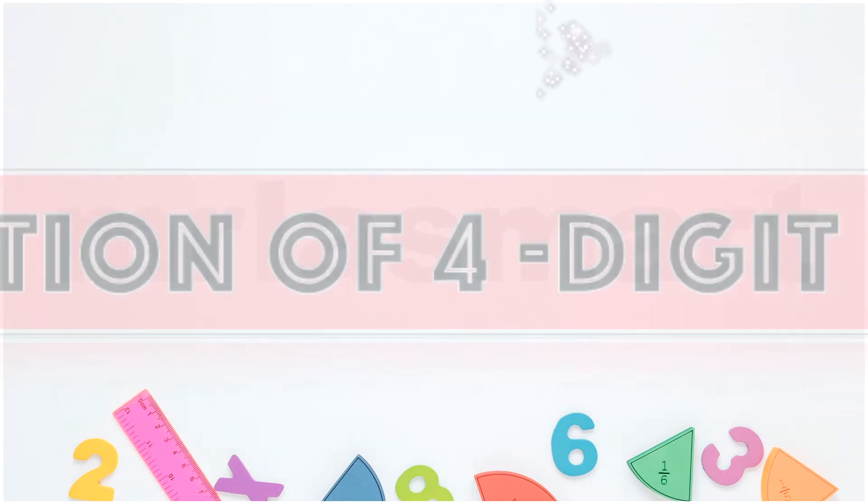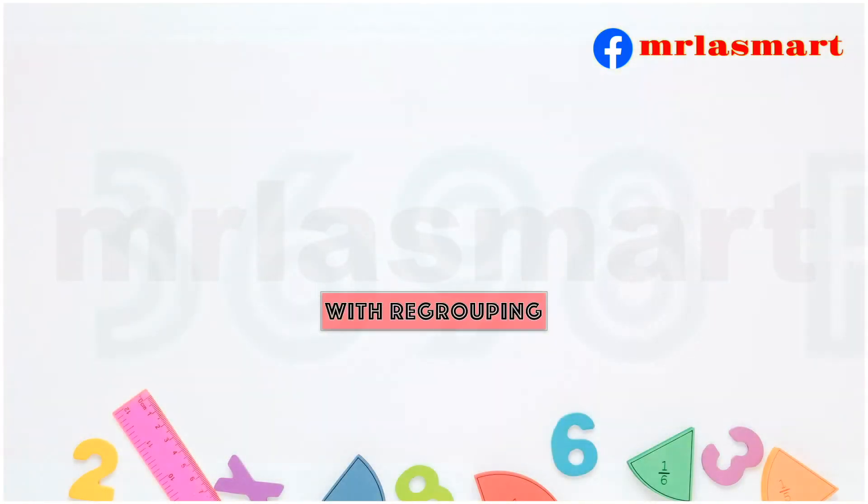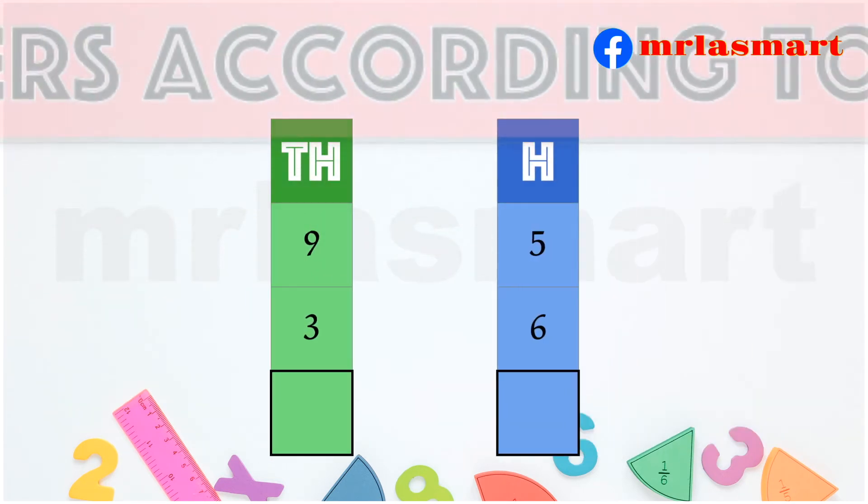Subtraction of four-digit numbers with regrouping. Subtract 3698 from 9542. Arrange the numbers according to their place values.